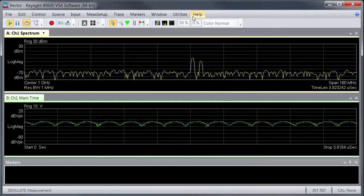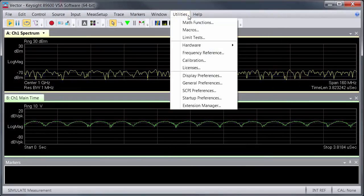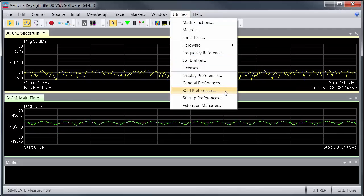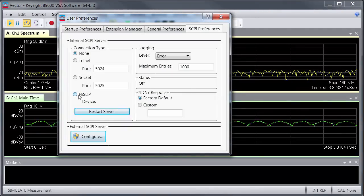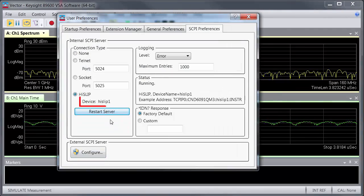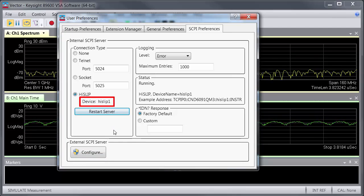Next, I need to configure the instrument's SCPI connection. So go to utilities, SCPI preferences, select the HiSLIP connection type, and then restart the server to get the instrument address. For me, the address is hislip1, but yours might be different, so take note of this number.